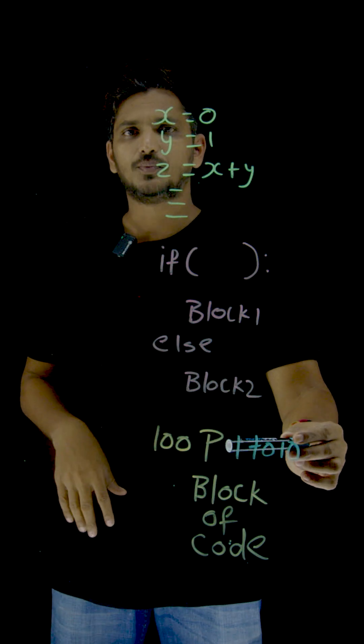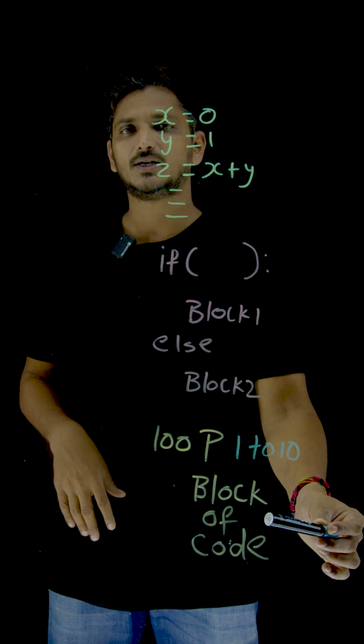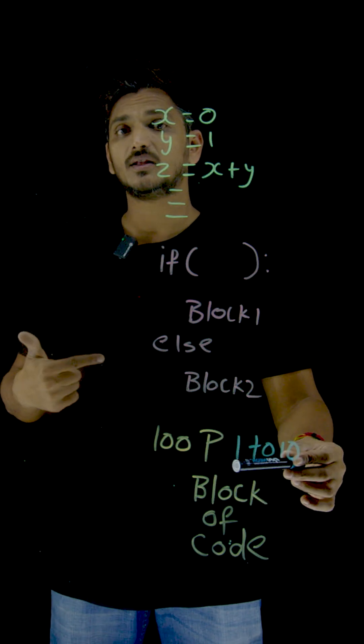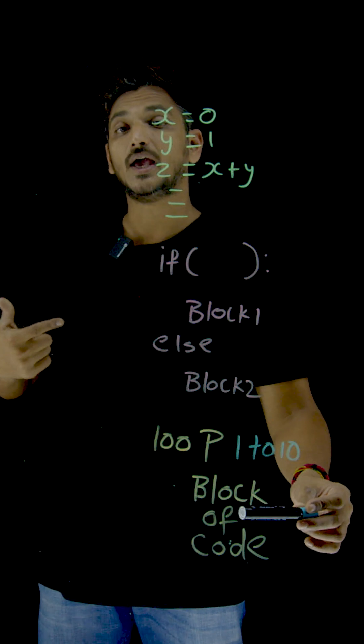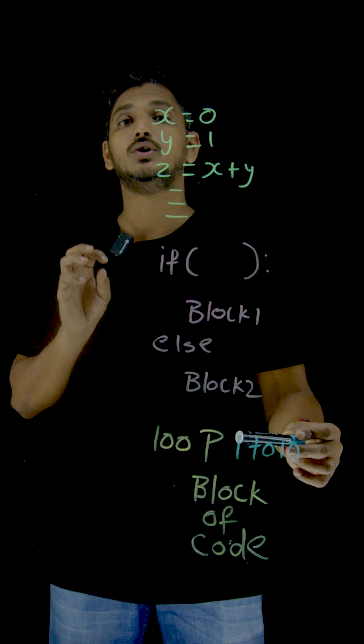Loop displays first student, loop displays second student, loop displays third student. How many students are there? 70 students are there. This loop has to be executed for 70 times. Each time this code is going to display the student details.